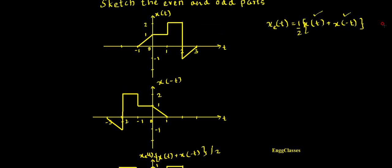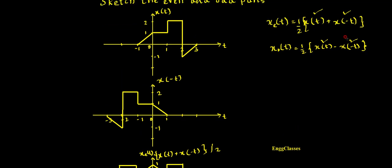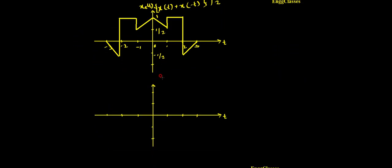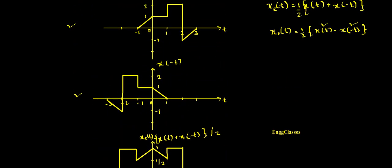The next task is to sketch the odd part of the signal. xo(t) is equal to (1/2) times [x(t) minus x(-t)]. This is the formula to find the odd part. I need x(t) and x(-t) — both signals are already available. Earlier I added them; now I need to subtract them, then divide by 2.